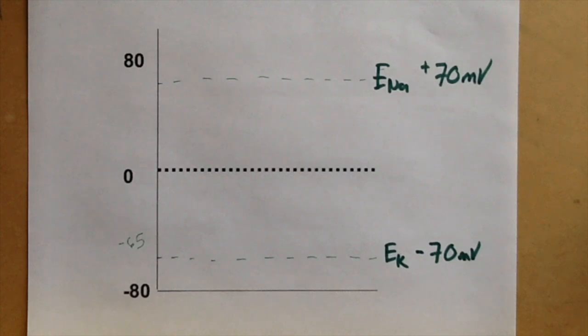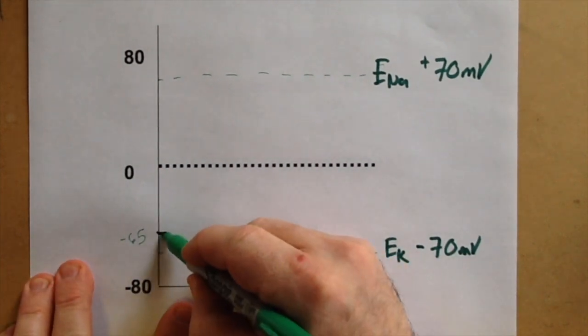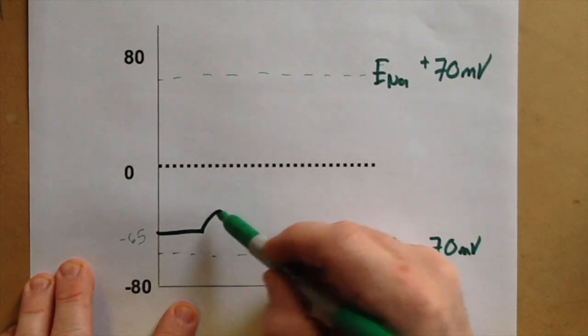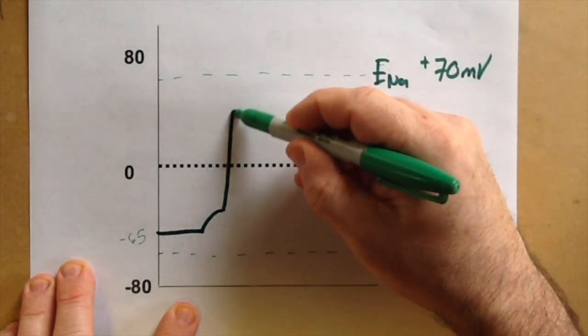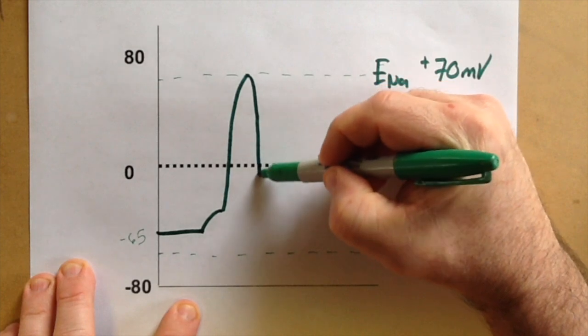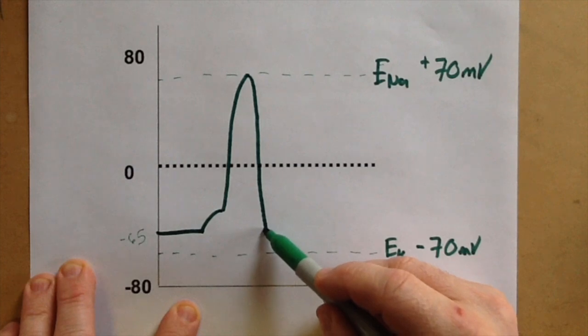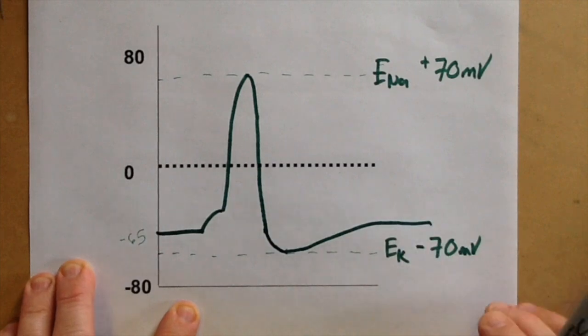If we look at a typical action potential, we would see a cell that is at the resting membrane potential. We have a slight depolarization that allows us to reach threshold, a very quick depolarization as the cell becomes very positive very quickly, a repolarization that is also quickly going to take the cell to become more negative again, and then a hyperpolarization as we go below the resting membrane potential towards EK, and then a slow return to our baseline.